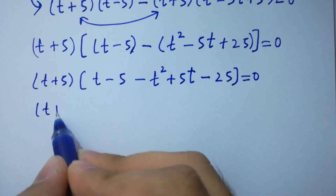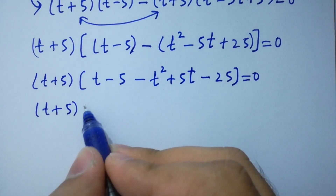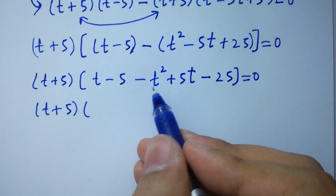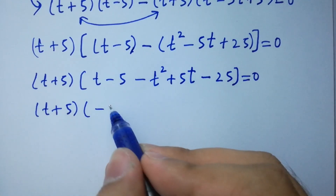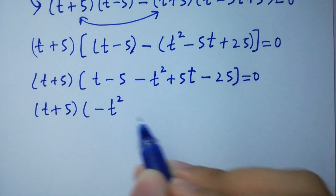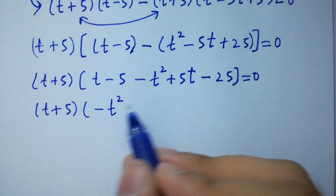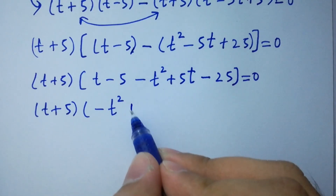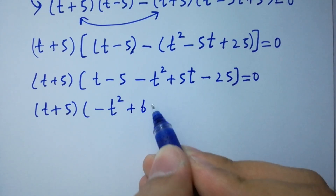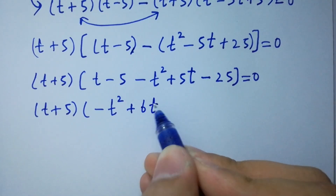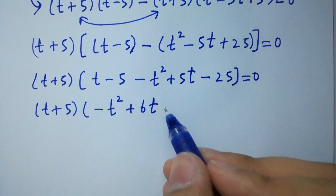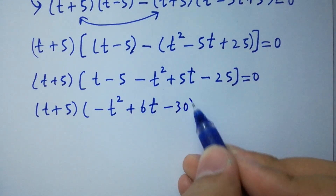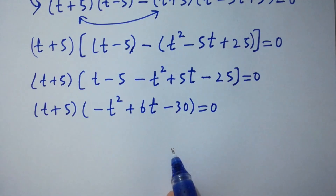Further simplifying, t plus 5 as it is. Inside the bracket: minus t squared, then 5t plus t gives 6t, and minus 5 minus 25 gives minus 30, equal to 0.